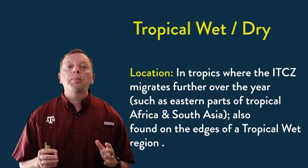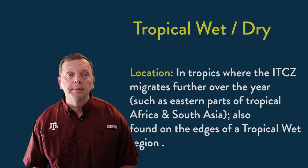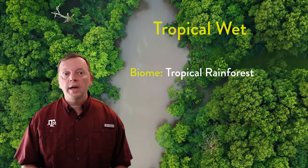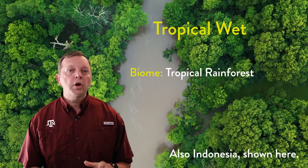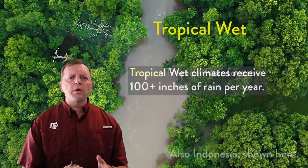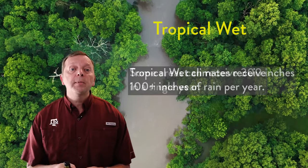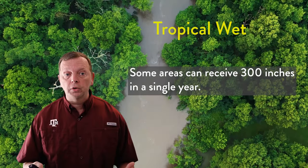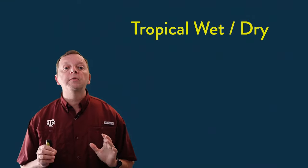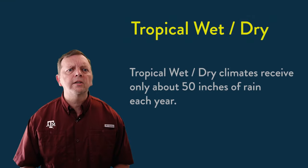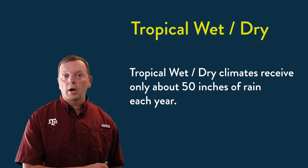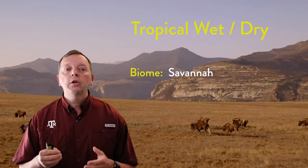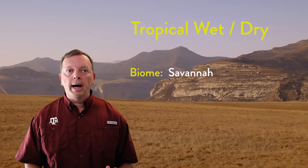Eastern Africa and South Asia are places where you can find the tropical wet dry climate. The biome found in the tropical wet climate is the tropical rainforest, such as the Amazon or the Congo rainforests in South America and Africa. A tropical wet dry climate receives much less rainfall — usually less than 50 inches per year — and therefore cannot support a rainforest. Instead, in a tropical wet dry climate, we find a savanna biome.